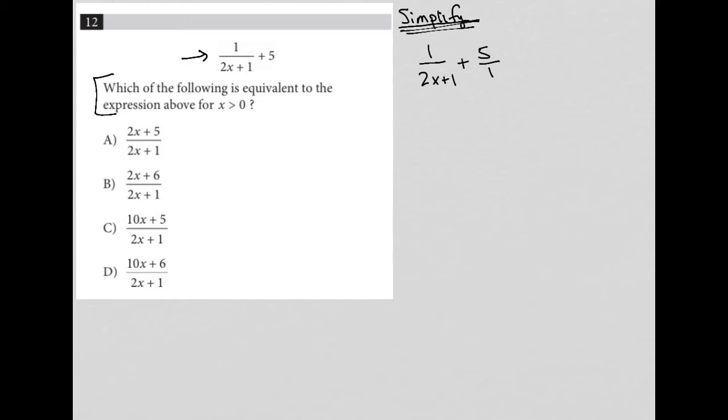My common denominator here will be the 2x plus 1. So I want to multiply the fraction on the right, my 5 over 1, I want to multiply it by 2x plus 1 in the numerator and in the denominator.